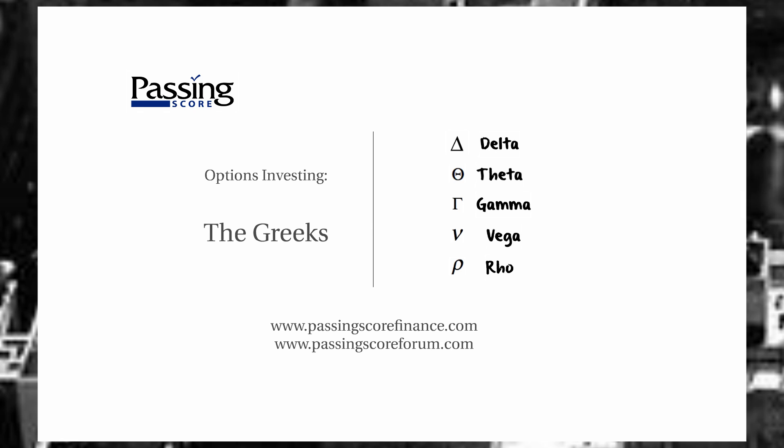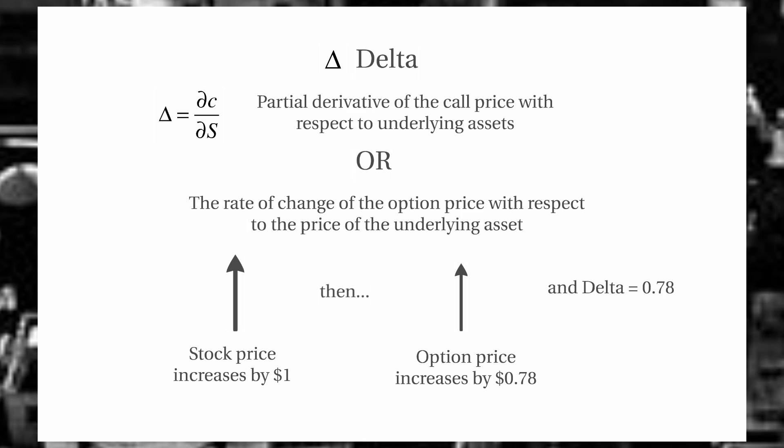Let's take a look at our first one, which is delta. This is the relationship between the underlying asset — we'll use stocks in our examples — and the movement in the option value. Mathematically, this is the partial derivative of the call price with respect to the underlying asset. In our example, our stock price in the market moves up $1, and at the same time our option price has increased by 0.78. So what we've observed is a delta of 0.78.